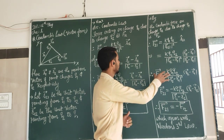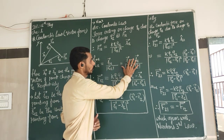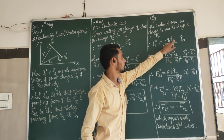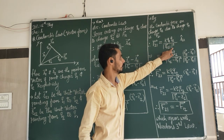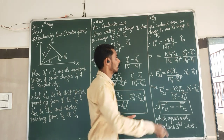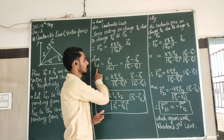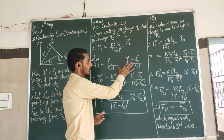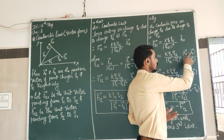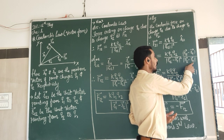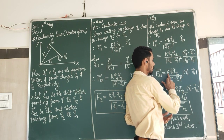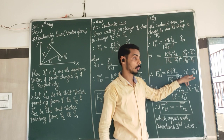F21 equals K·Q1·Q2 upon R21 magnitude squared, into R̂21 unit vector showing the direction. Similarly, we find out the unit vector R̂21 equals (R2 minus R1) divided by |R2 minus R1|. So putting this value in, F21 equals K·Q1·Q2 multiplied by (R2 minus R1), divided by |R2 minus R1| cubed. This part gives magnitude, and this part gives direction.